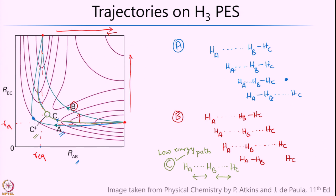This point C‡ is also called the saddle point or transition state, and the geometries in and around it are called activated complexes. If a reaction proceeds along this trajectory, there is a much greater likelihood of it falling into the product regime, compared to paths A and B. I hope this has given you some idea of how to look at trajectories on a potential energy surface, taking H3 as an example.